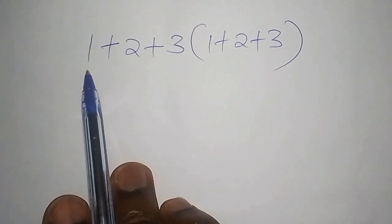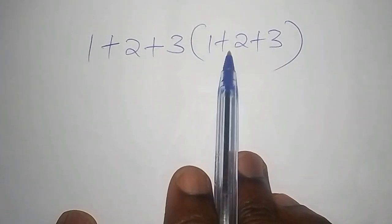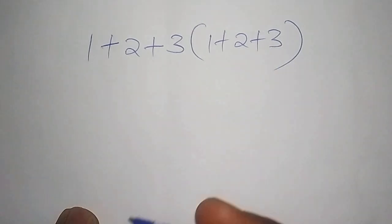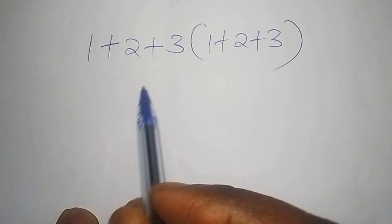So we have 1 + 2 + 3(1 + 2 + 3). First of all, I want to tell you the reason for their failure. One thing that they did: they said that we're going to work out the bracket first.